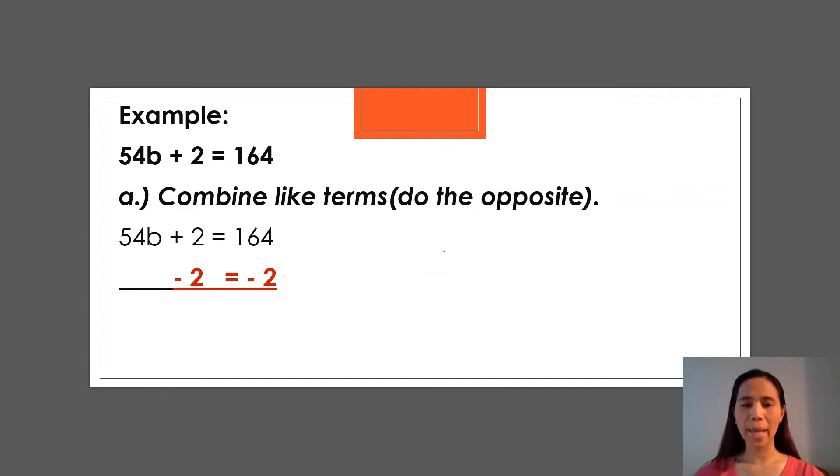54b + 2 = 164 minus 2 on the left side and minus 2 on the right side. Now what do we have? Or what do we get? Since 2 - 2 = 0, we can cancel that. And then we now can subtract 164 - 2. And what do we get? Yes, you are correct if you got 162.